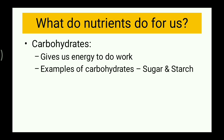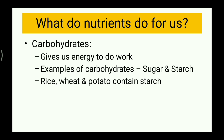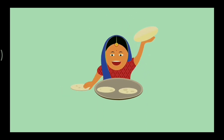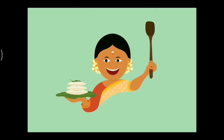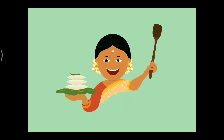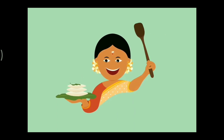Examples of carbohydrates are sugar and starch. We all know sugar — everything that is sweet contains some kind of sugar. Starch is present in rice, wheat, and potato. The rotis our mothers make are made from wheat, so they contain starch. The idlis our mothers make are made from rice, which also contains starch. So both contain carbohydrates, and carbohydrates are energy-giving foods that we should have in our daily meals.